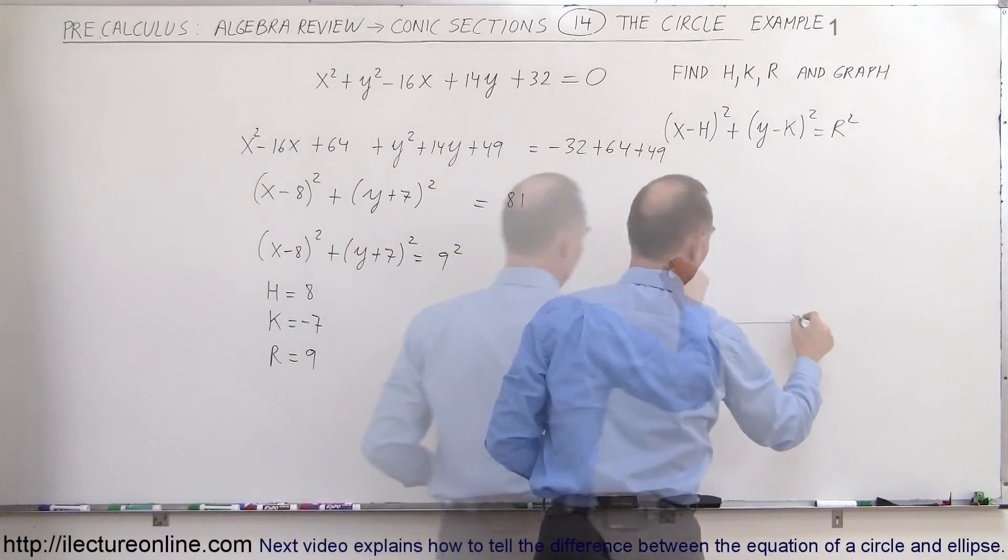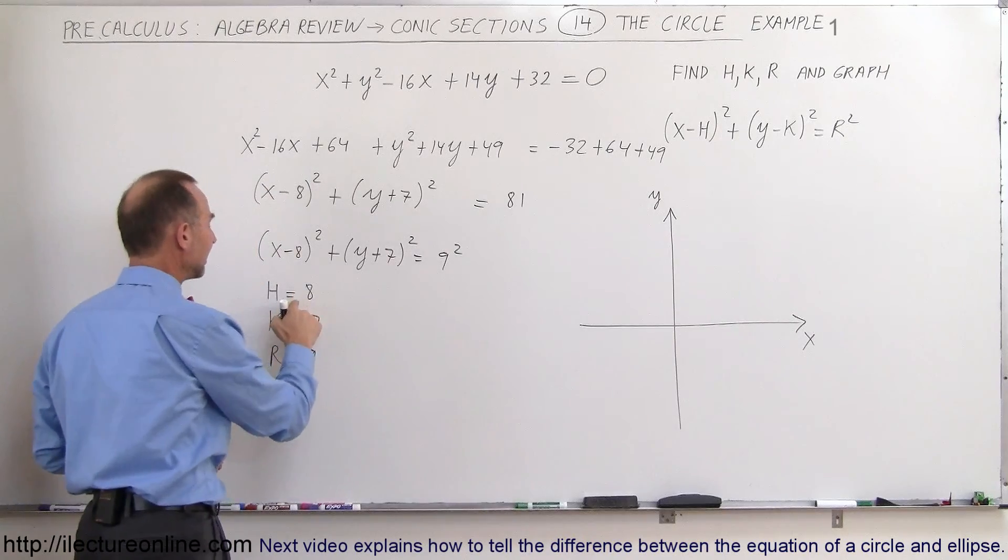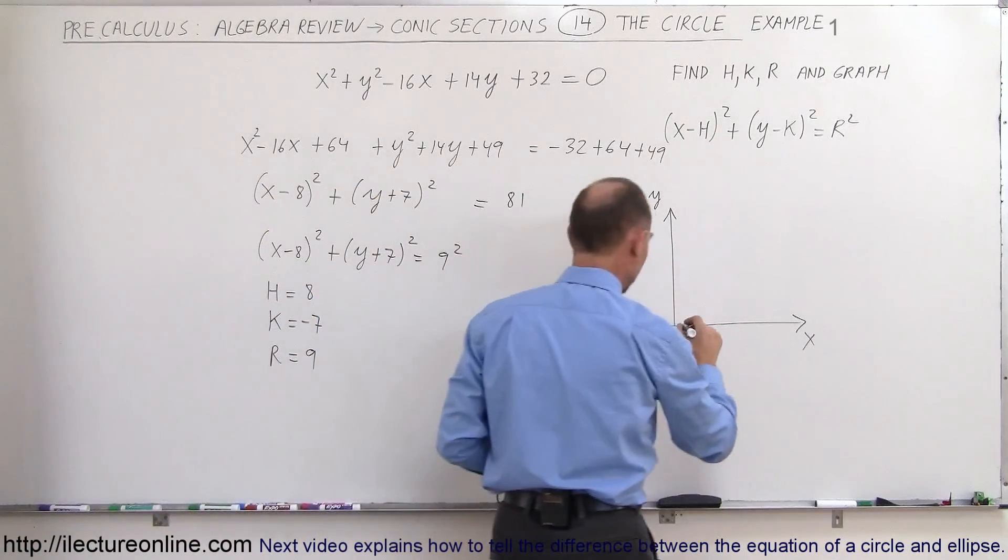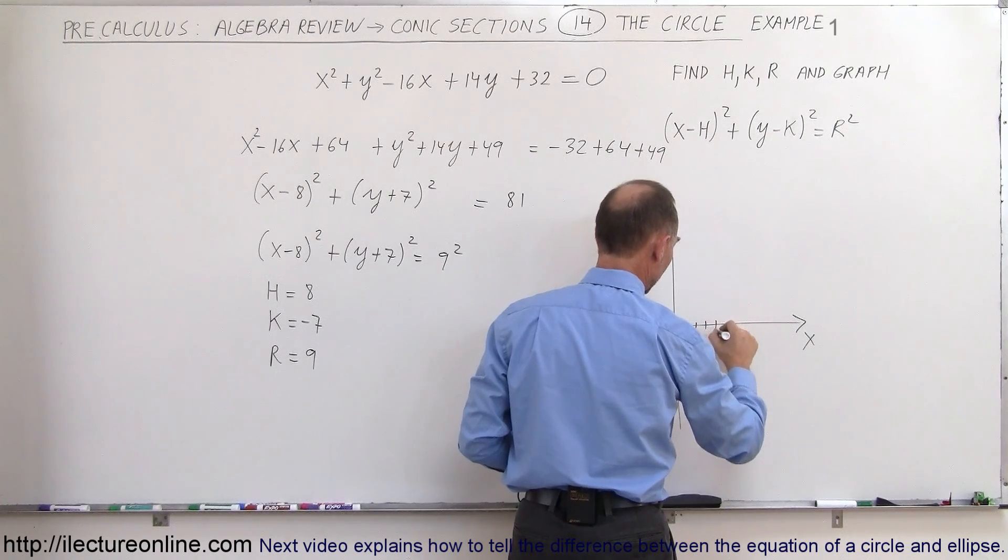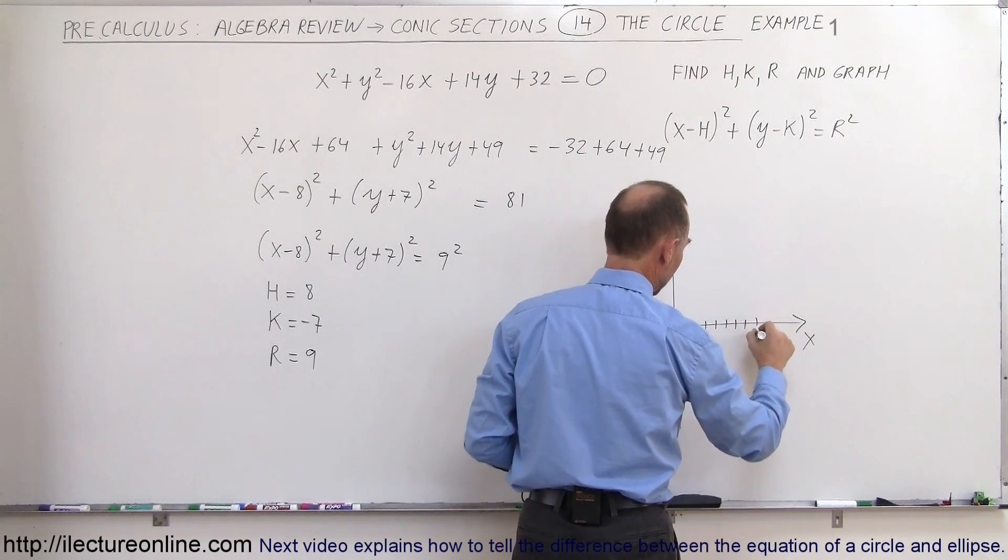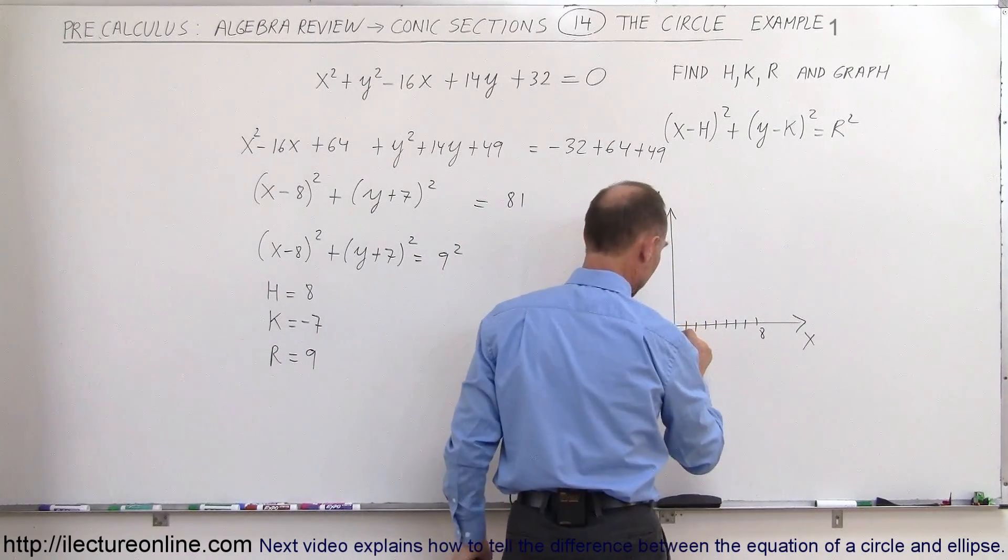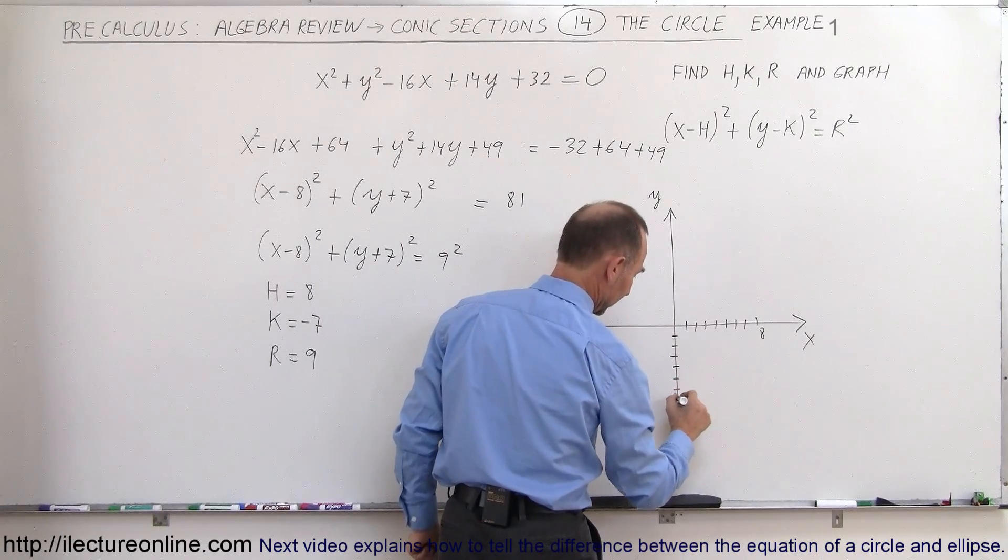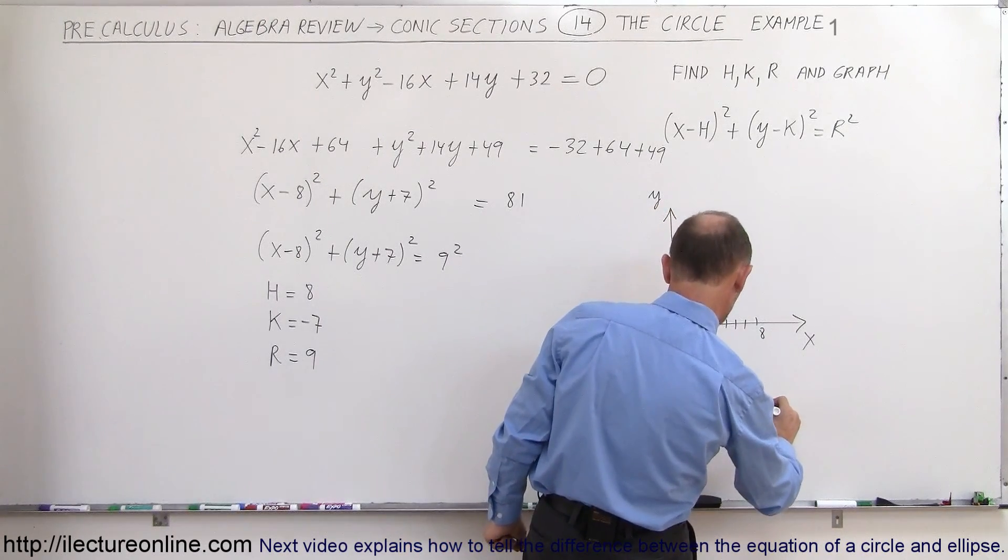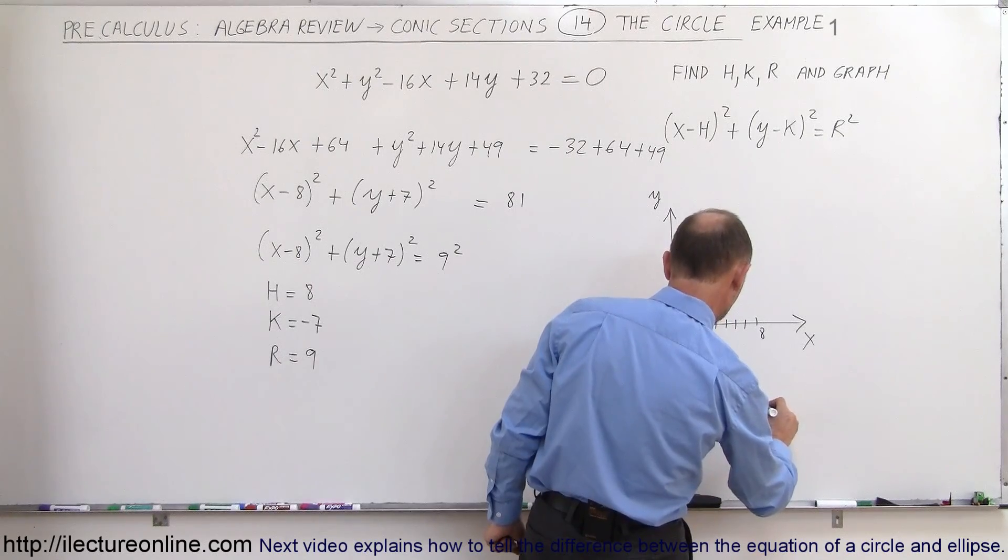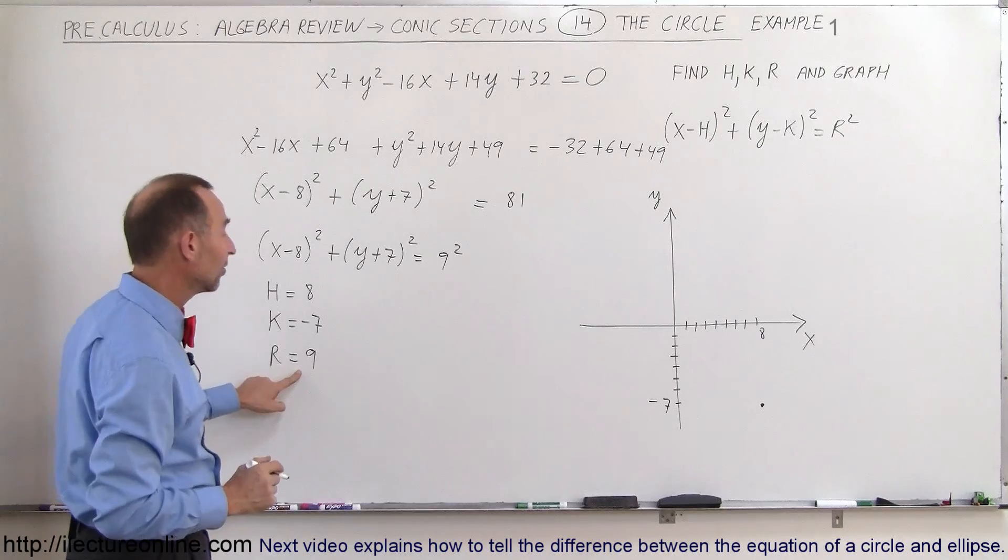There's your y axis, there's your x axis. First of all, the center of the circle is at 8 and minus 7. So x equals 8: 1, 2, 3, 4, 5, 6, 7, 8. There's my x equals 8. And y equals negative 7: negative 1, 2, 3, 4, 5, 6, 7 right there. Where the two meet, right there is the center of the circle. Now the radius is 9.